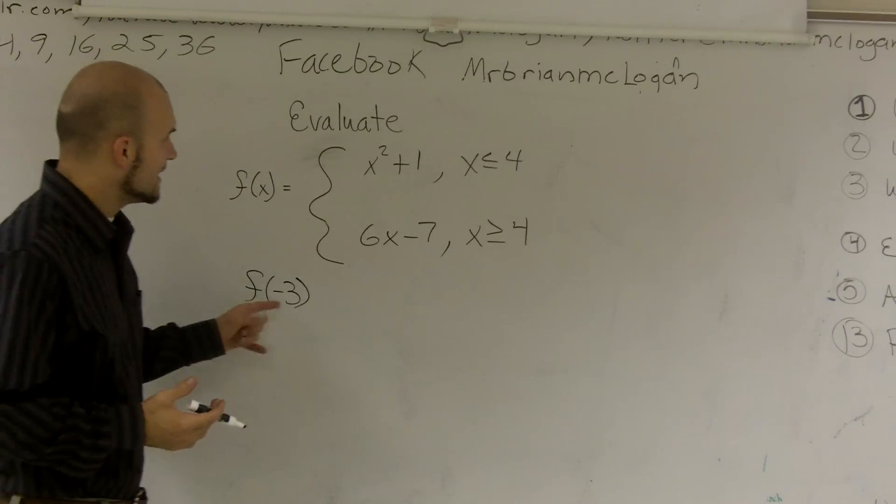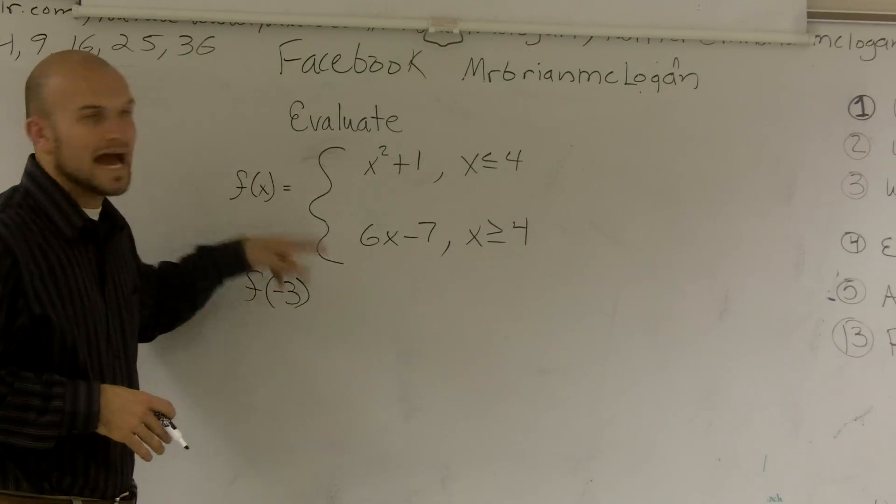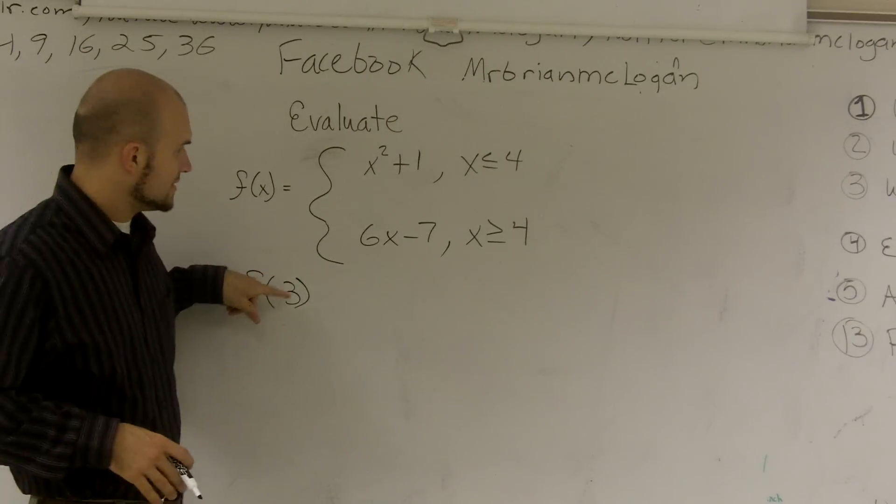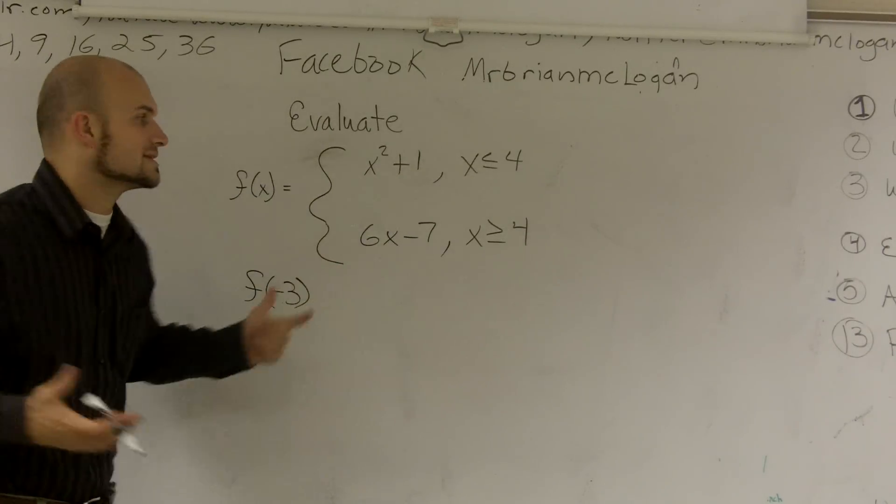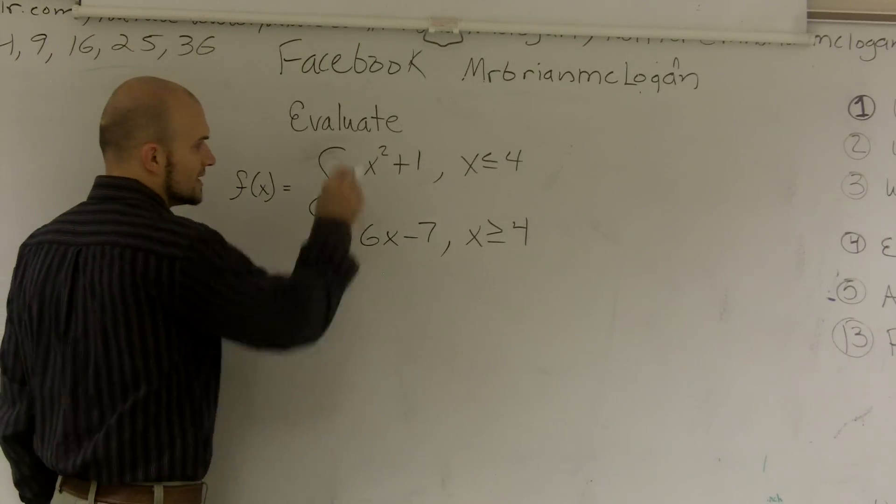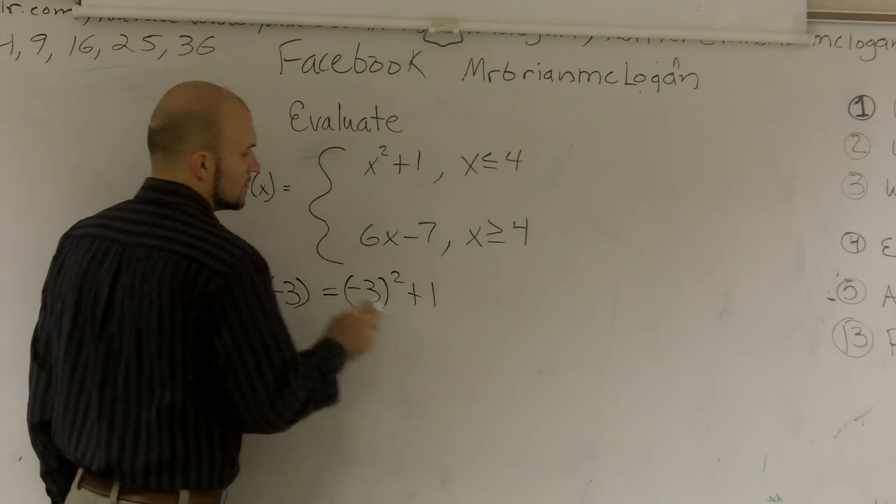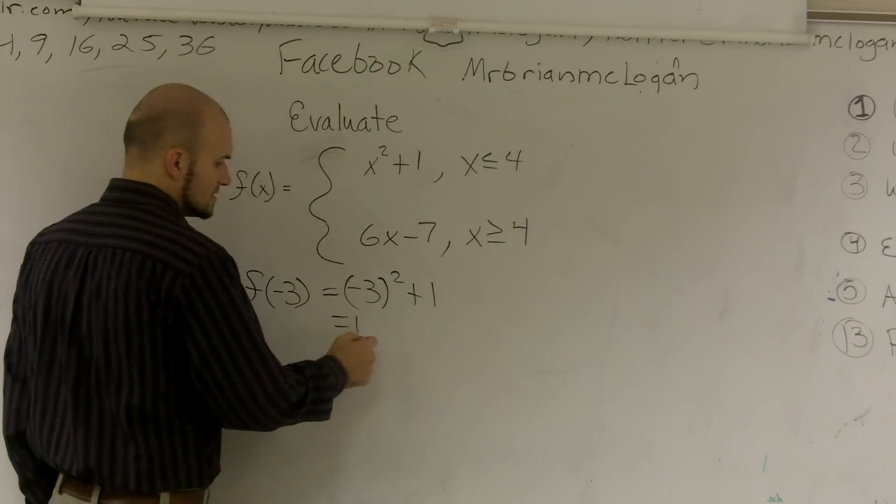So if I want to evaluate f of negative 3, I have to determine which function am I going to put it into. Because f of negative 3 is not true for both of these. It's only true for x values, because remember this is x, this is negative 3. It's only true when it's less than or equal to negative 4, so I'm only going to plug it into this function. Well negative 3 times negative 3 is a positive 9, 9 plus 1 equals 10.